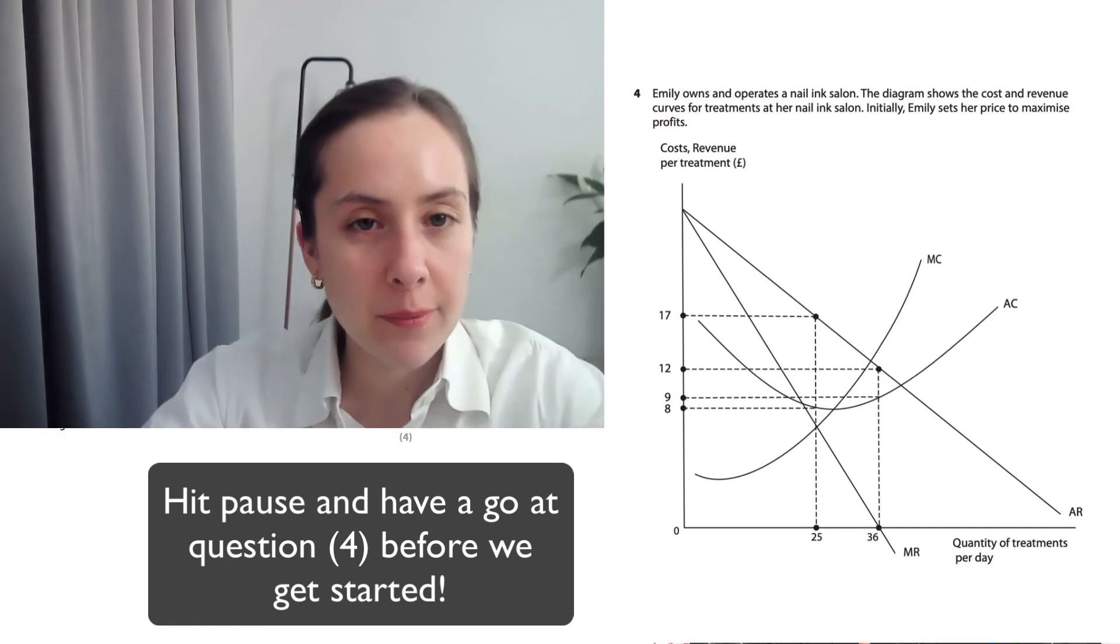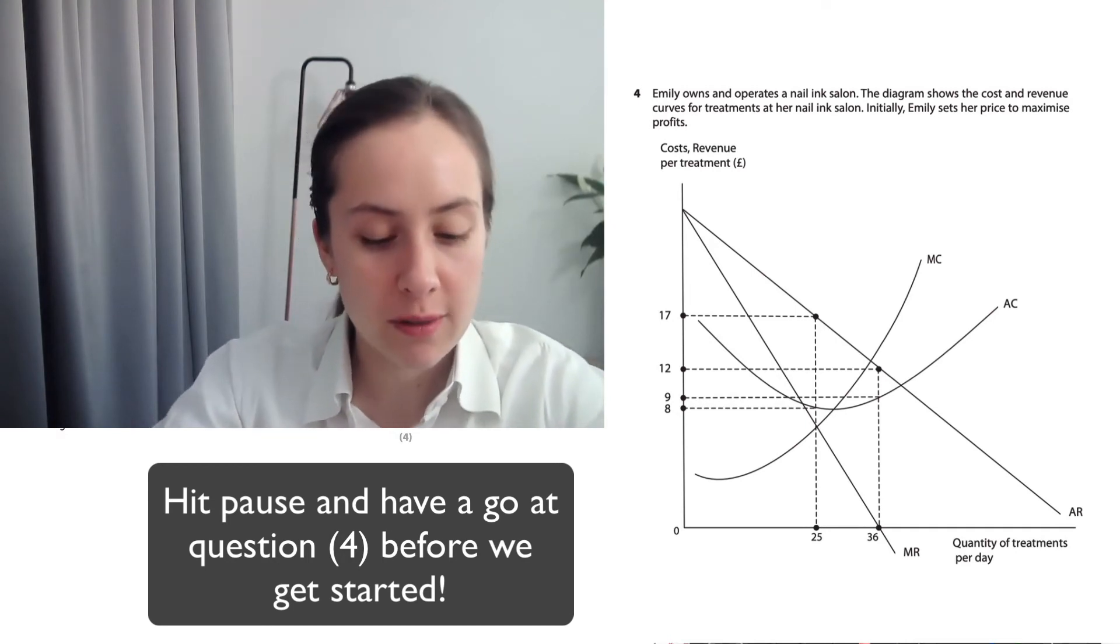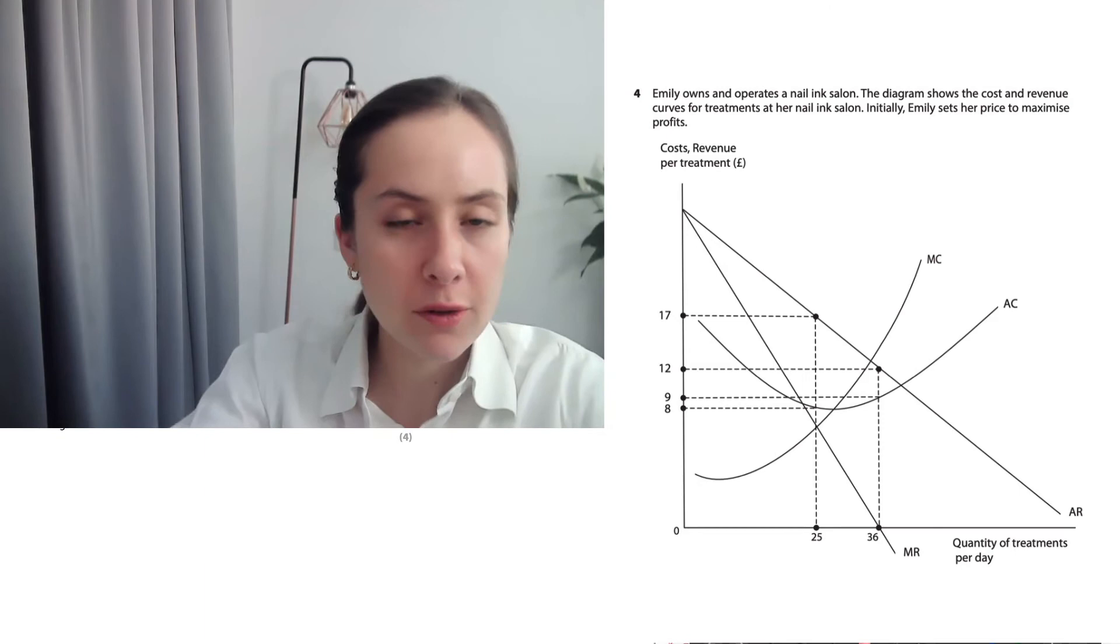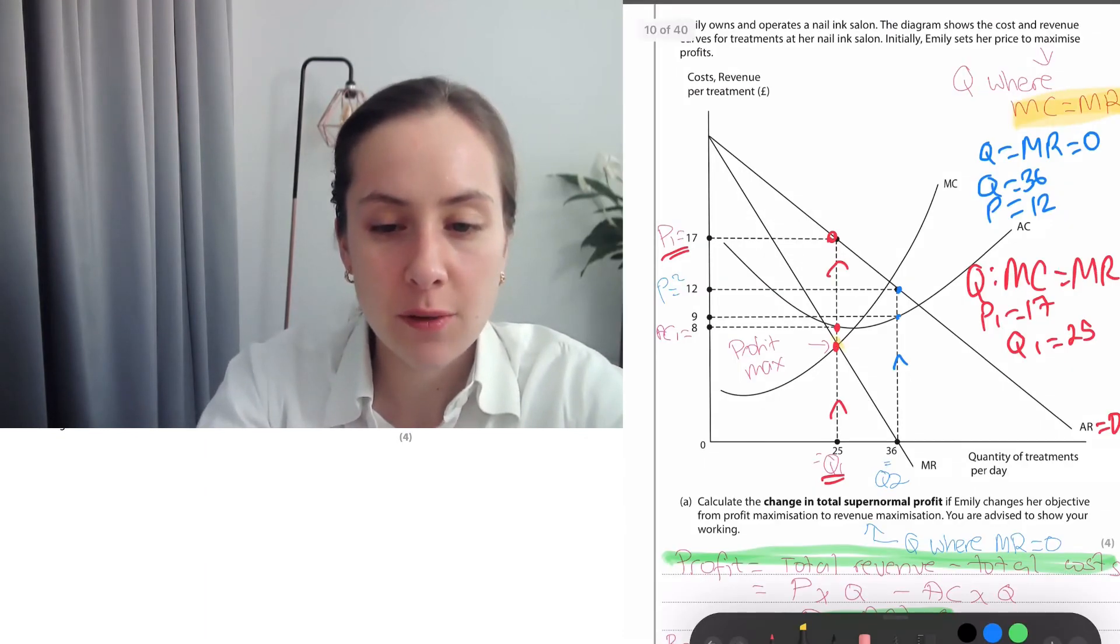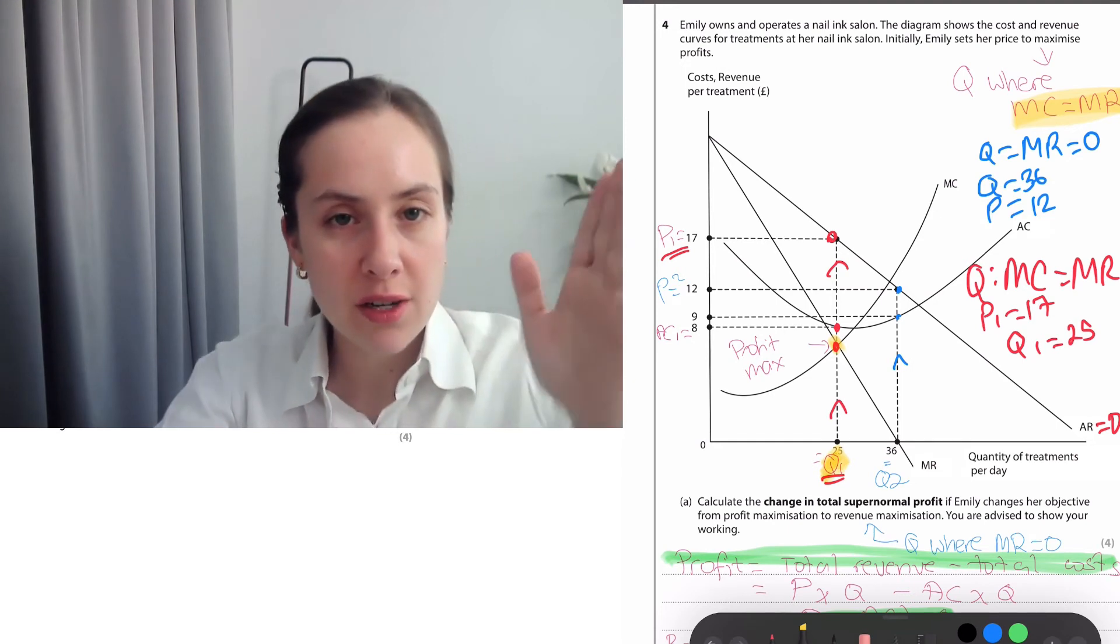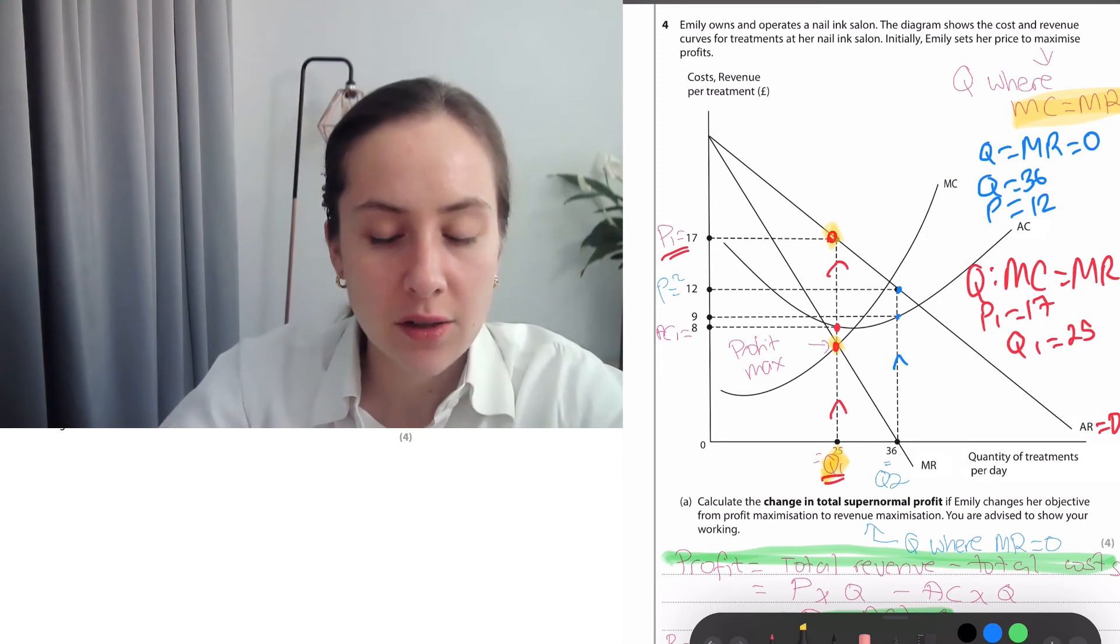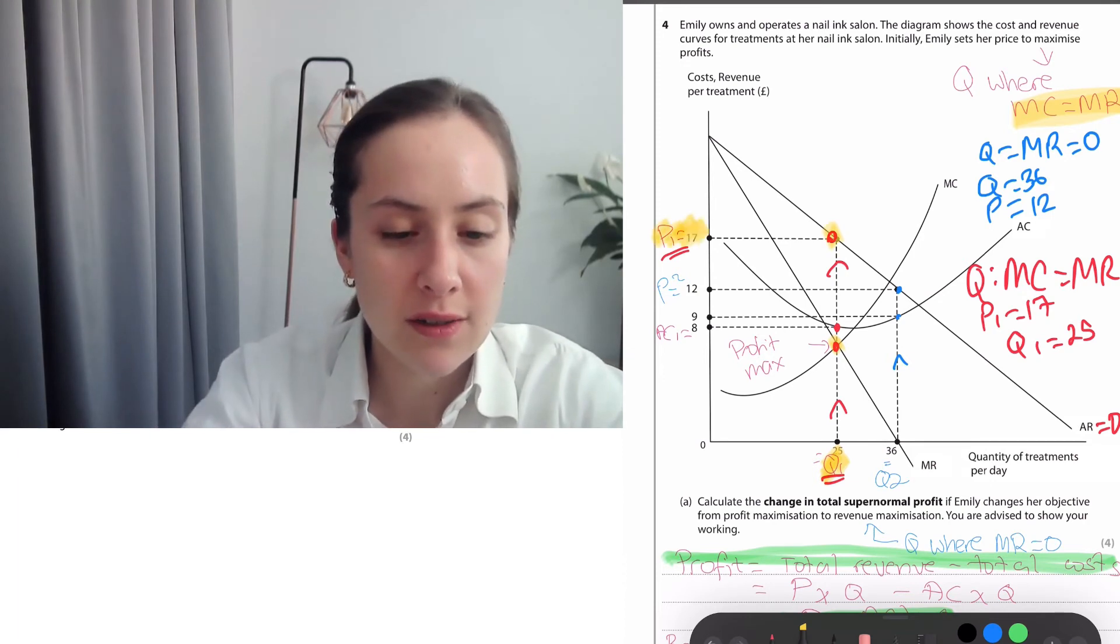Here we have Emily. Emily was previously profit maximizing, so if you're maximizing profits, you set quantity where MC equals MR, which is there. This is the quantity, and Emily should charge the highest price that consumers are willing and able to pay, which is this price, and that's 17.